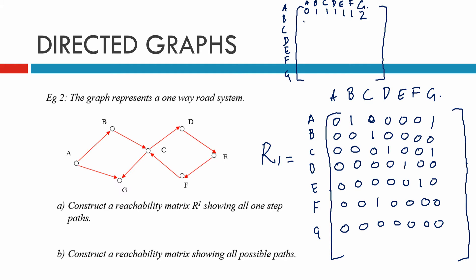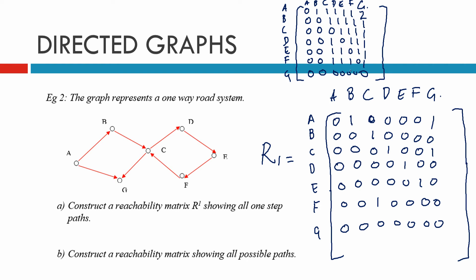Continuing the all-paths matrix: B is zero, zero, then one, one, one, one, one. C is zero, zero, zero, then one, one, one, one. D is zero, zero, then one, zero, one, one, one. E is zero, zero, one, one, zero, one, one. F is zero, zero, one, one, one, zero, one. And G doesn't connect to anything at all. So that's the complete reachability matrix.